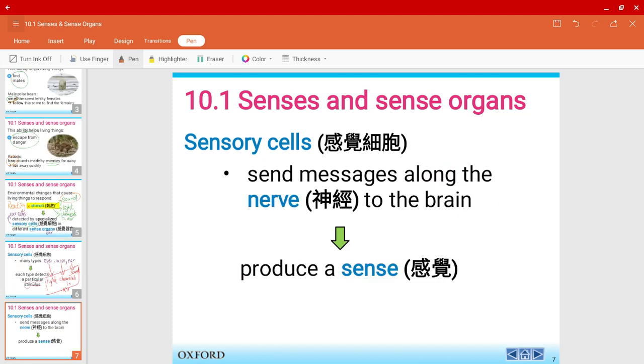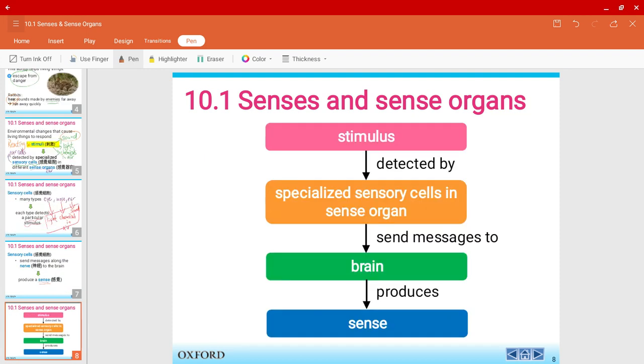Also, the sensory cells will send messages along your nerve to your brain, and this will cause you to produce a sense. So let's see the whole flow chart over here. First there'll be a stimulus detected by the specialized sensory cells in the sense organs. This will be sent to your brain and eventually the sense is produced.